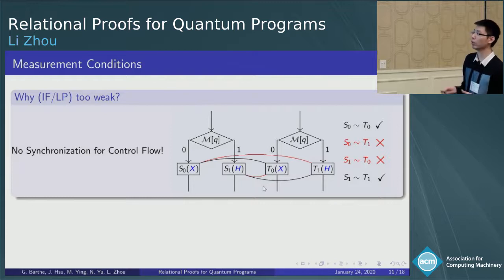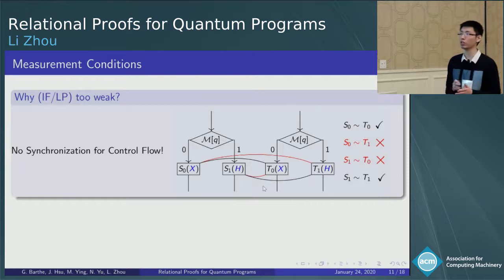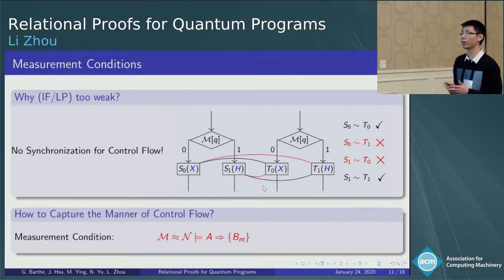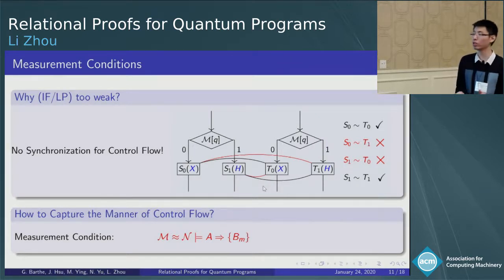For example, here, the equivalence between these two if statements may be lost if we use the if rule. So how to capture the manner of control flow? To address this, we introduce the measurement condition in this form. I won't go into detail due to the limit of time, but this form indeed works.